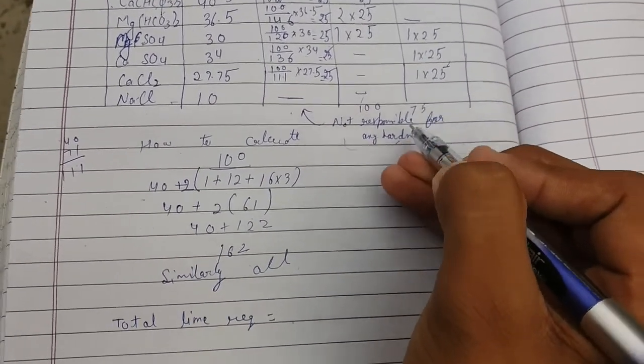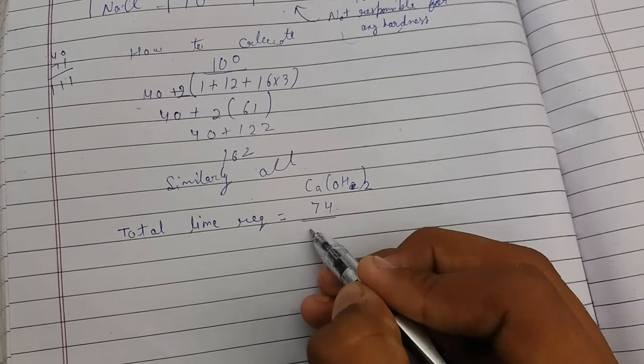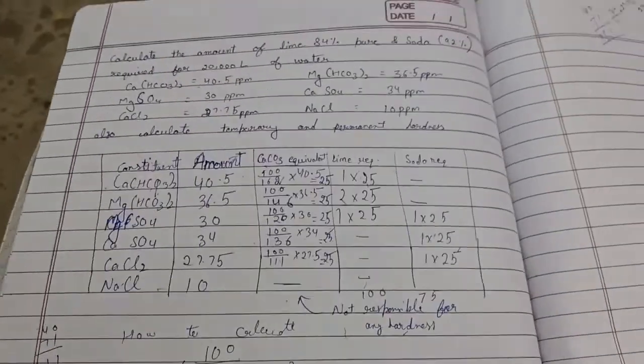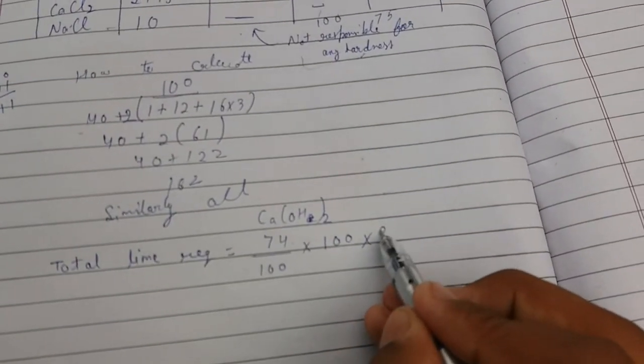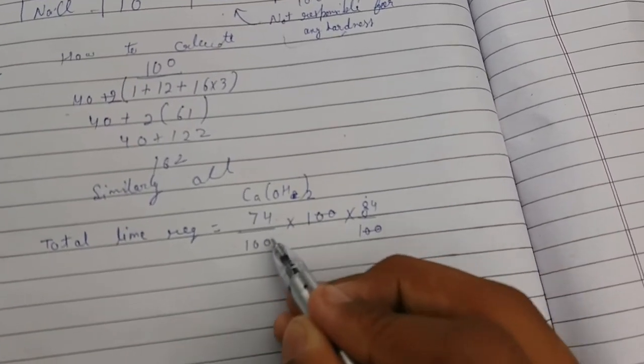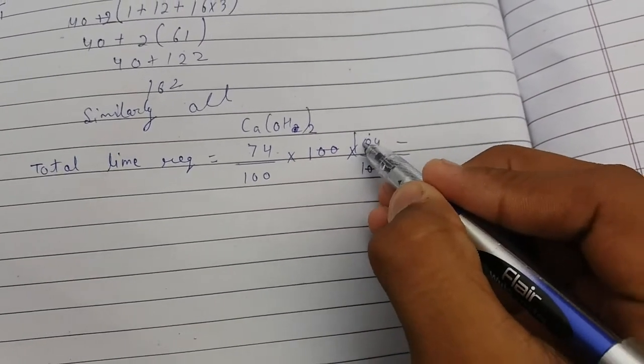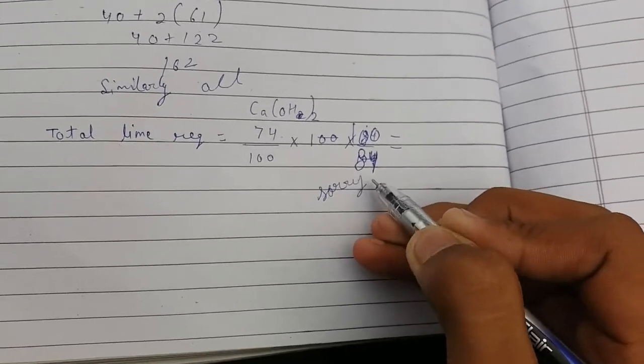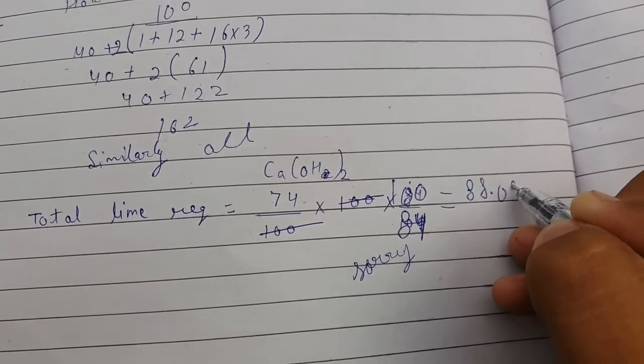Now the total lime required for the reaction tank is 100, and for soda it is 75. We will write Ca(OH)2 as the lime formula. 74 is its equivalent weight and 100 is the lime required. We need 84%, so we will multiply it with 84 upon 100. Sorry, the 100 will come up and 84 will come down. Sorry for the mistake. The answer after calculation will be 88.09%.